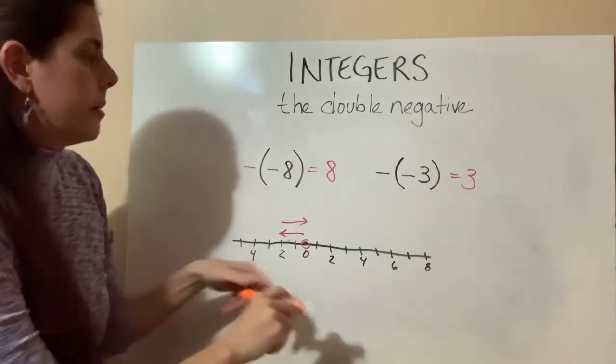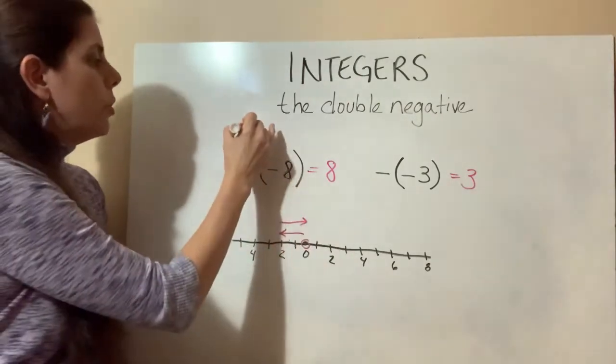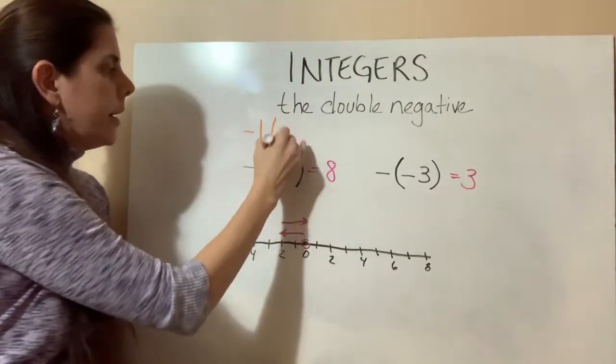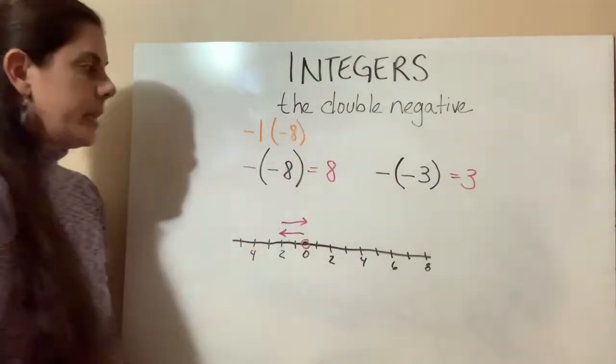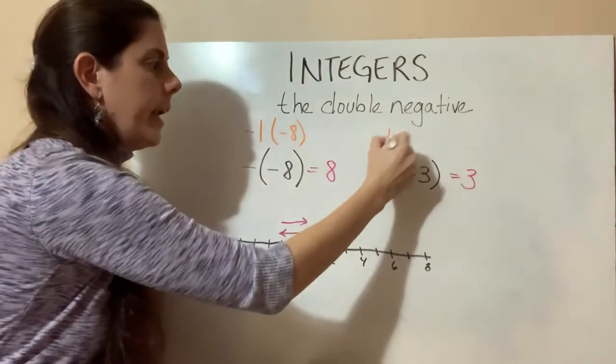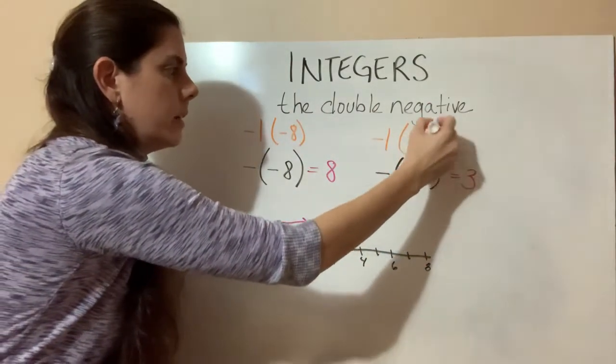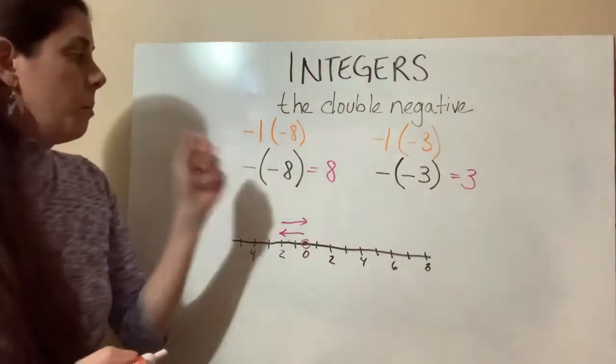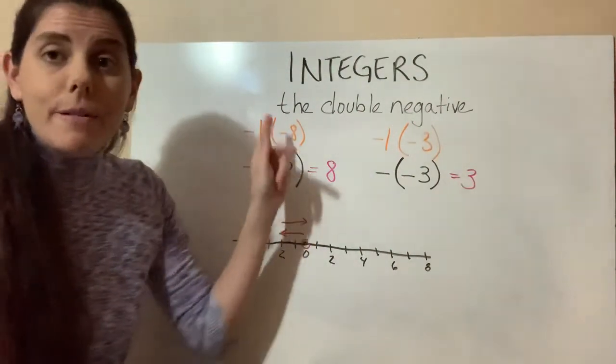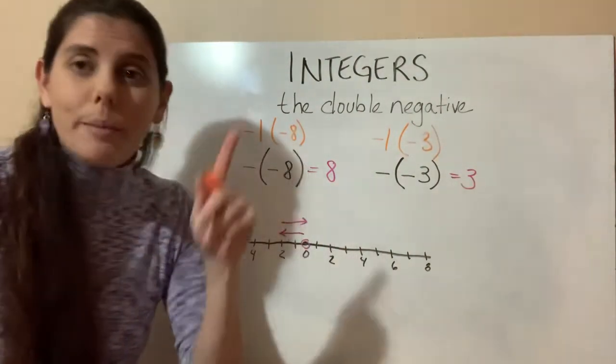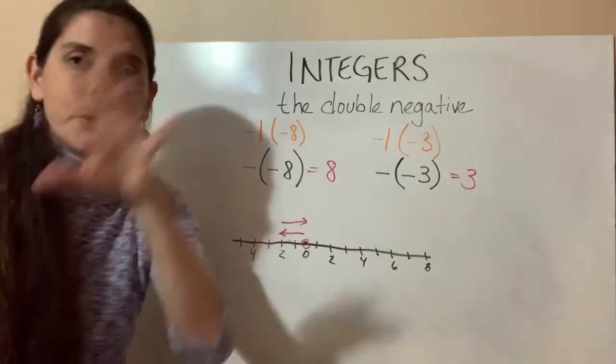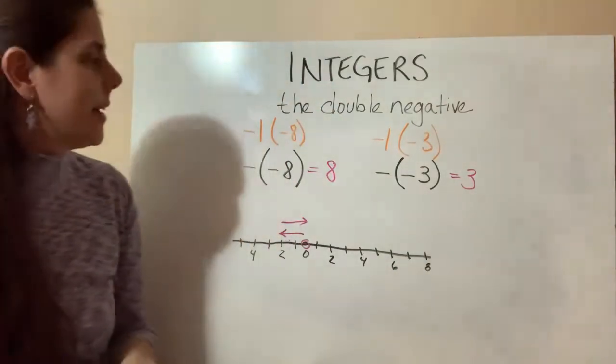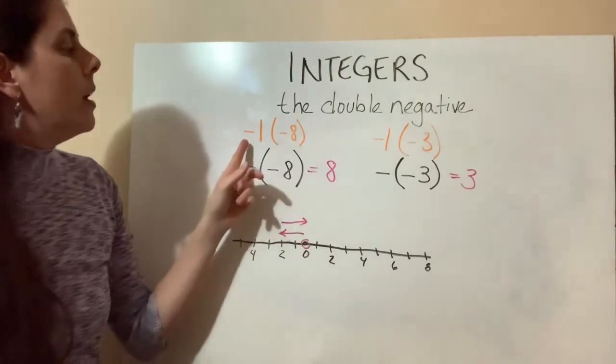You could write it as a negative one times a negative eight, and then a negative one times a negative three. Because really, there's that invisible one. That invisible one is going to pop up a lot. It's going to be sprinkled here throughout this class and the next class, this invisible one.